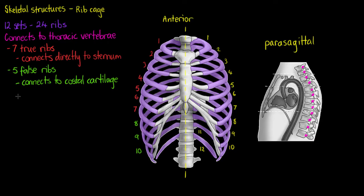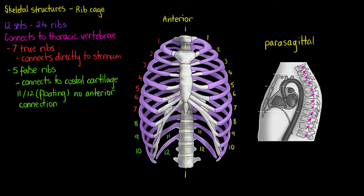Their cartilage connects directly to the cartilage of our number seven rib, and 11 and 12 do not connect anteriorly at all, so they're classified as floating ribs — no anterior connection. So once again we have 12 sets of ribs: 7 true, 5 false, with the last two sets of the false being floating.